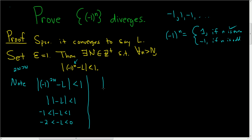And also, we can look at |(-1)^(2n+1) - L|. 2n + 1 is obviously bigger than N, so this is less than 1 as well by hypothesis. So (-1)^(2n+1) is negative 1. So this is |-1 - L|, and this is less than 1.